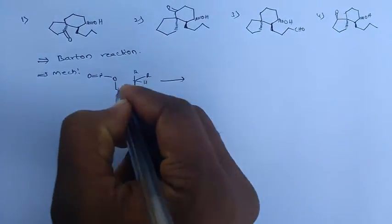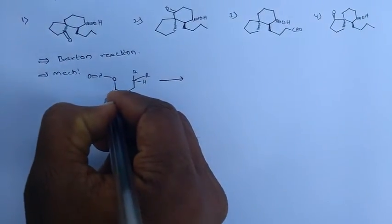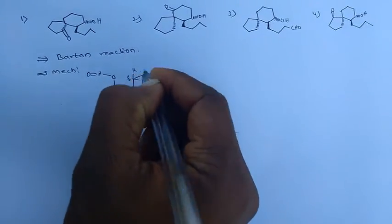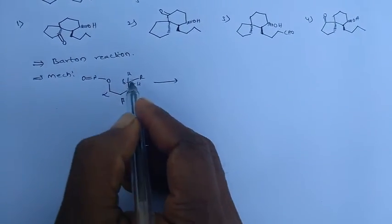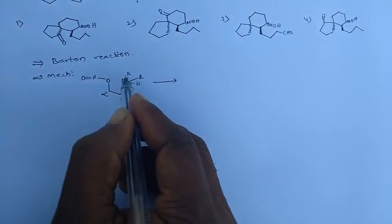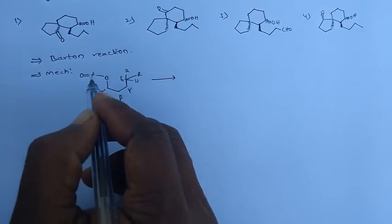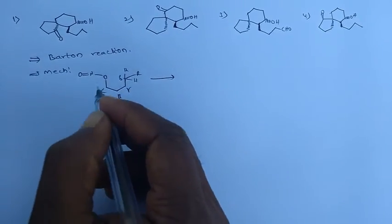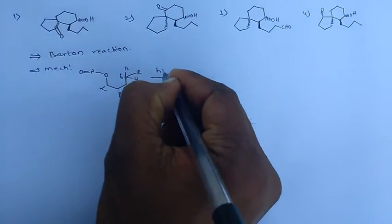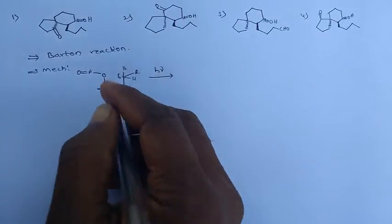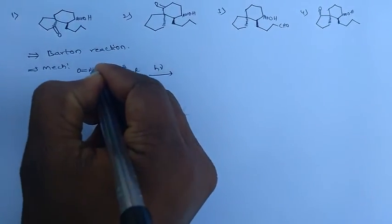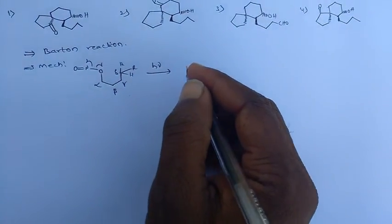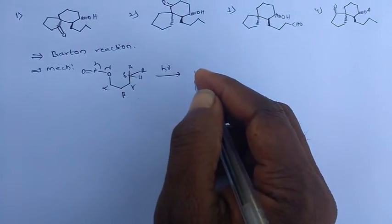This is the compound. Here, alpha, beta, gamma, delta — in the Barton reaction, the delta hydrogens must be present in the reactant. Then only the Barton mechanism and Barton reaction is possible. And this is under photochemical conditions, so through radical formation the mechanism is possible for the Barton reaction.